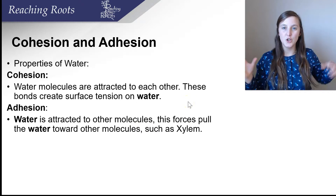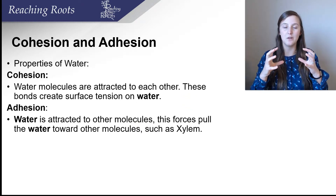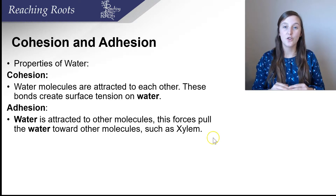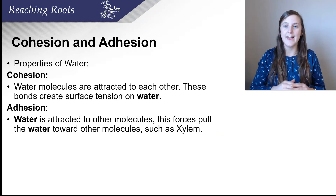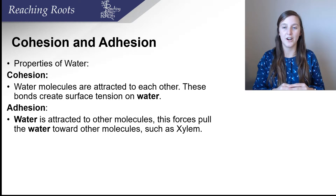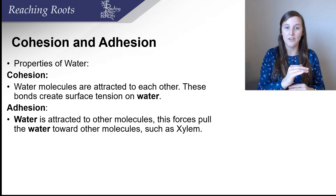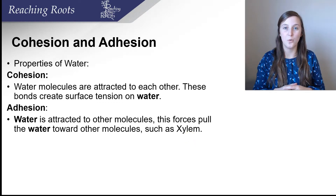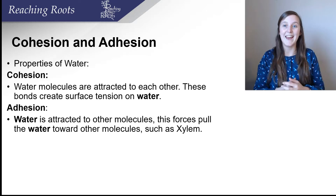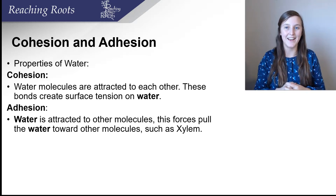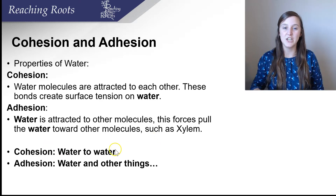The first property is cohesion — two water molecules coming together. Water molecules are attracted to each other, and these hydrogen bonds create surface tension on water. Have you ever seen a small insect walk across water very easily? That's because of the cohesion forces of water — the water sticking together so that the bug, since it's very light, can literally walk across the water. Adhesion is the force that causes water to be sticky to other molecules, such as the side of a xylem. To summarize: cohesion is water to water, and adhesion is water to other things like the xylem.